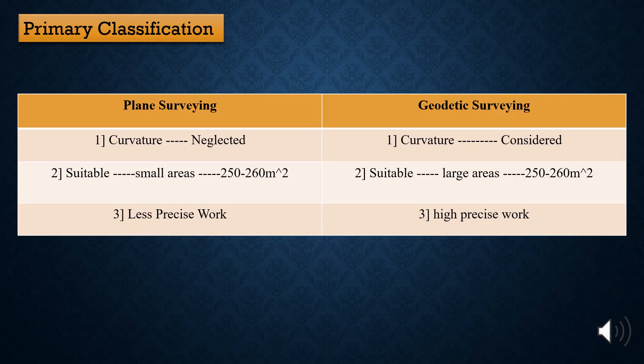The next important part is primary classification. In primary classification, surveying is divided into two types: plane surveying and geodetic surveying. Plane surveying is carried out for small areas, that is 250 to 260 square meters. Up to that area, we carry out plane surveying. For larger areas — more than 260 square meters — we use geodetic surveying.